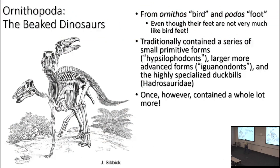The name Ornithopoda — 'ornitho' meaning bird (same as ornithology), 'podos' meaning foot — so 'the bird-footed ones.' It's an ironic name because their feet are not particularly bird-like. There are specialized Cretaceous forms with a three-toed foot, but without that backwards-pointing toe that makes a bird foot a bird foot. The group to which birds actually belong would have been a much better fit for the name, but sadly that's not how taxonomy went.